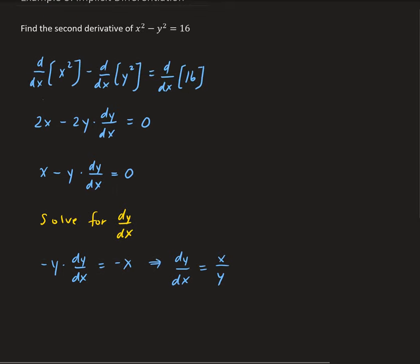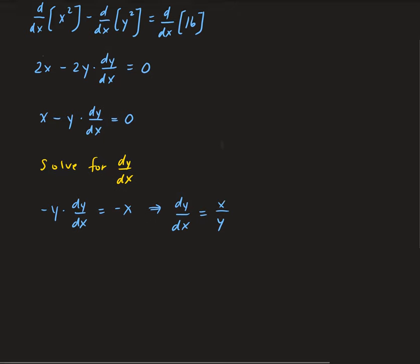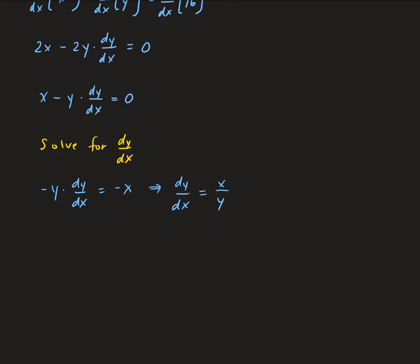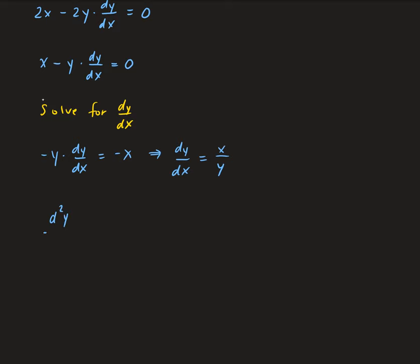We could take this a step further by replacing y with the original function, but since we want to find the second derivative we'll keep it in this form. So let's find the second derivative: d squared y over dx squared, which means taking the derivative of x over y with respect to x.